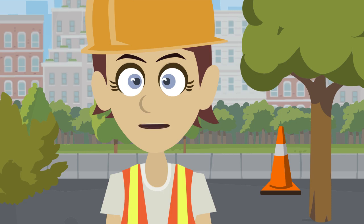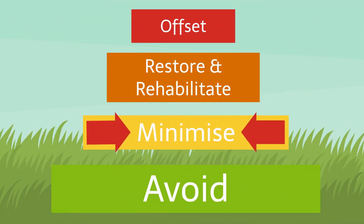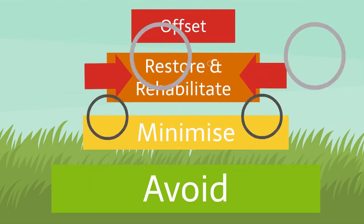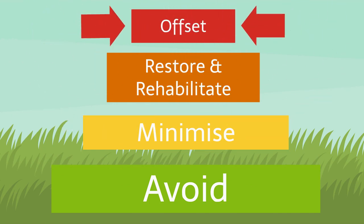The hierarchy prioritises how you might manage impacts to biodiversity in the following way: firstly, avoid any impacts in the first place; then minimise impacts to biodiversity as much as possible; if this is not possible, then any damage to habitat should be restored or rehabilitated; and as a last resort, destroyed habitat should be offset through the creation of new habitat.